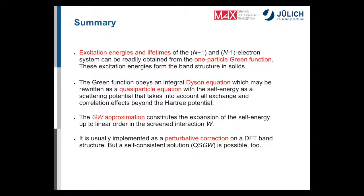In summary: the GW approximation, based on many-body perturbation theory, allows calculation of excitation energies and lifetimes using the one-particle Green function. The Dyson equation requires an approximation for the electronic self-energy, for which GW is a popular choice, typically implemented perturbatively as one-shot GW or in a self-consistent framework. Applications shown include silicon, zinc oxide, metallic sodium, and mercury telluride with spin-orbit coupling.